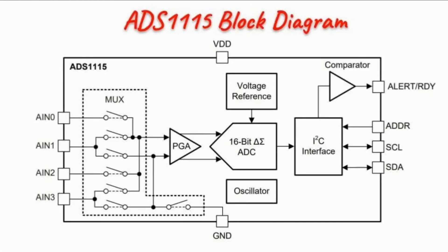A block diagram of the ADS1115 is shown here. It has a programmable multiplexer which can either multiplex up to 4 single-ended analog inputs or 2 differential inputs. The output of the multiplexer is fed into a programmable gain amplifier, which provides 8 levels of full-scale range from ±6.144V all the way down to ±0.256V.